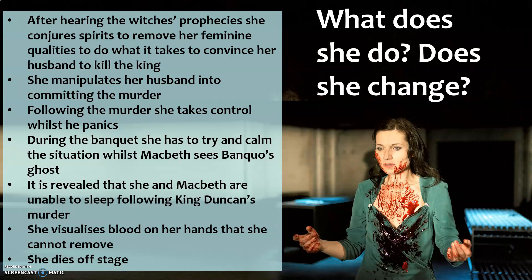In Act 5, Scene 1, moving towards the end of the play, she visualises blood on her hands. She comes on sleepwalking, almost awake and talking her thoughts, and seems utterly traumatised by what's happened. Finally she dies off stage at the end — a very low-key, unimportant ending, almost like she gets what she doesn't deserve because of what she's done.